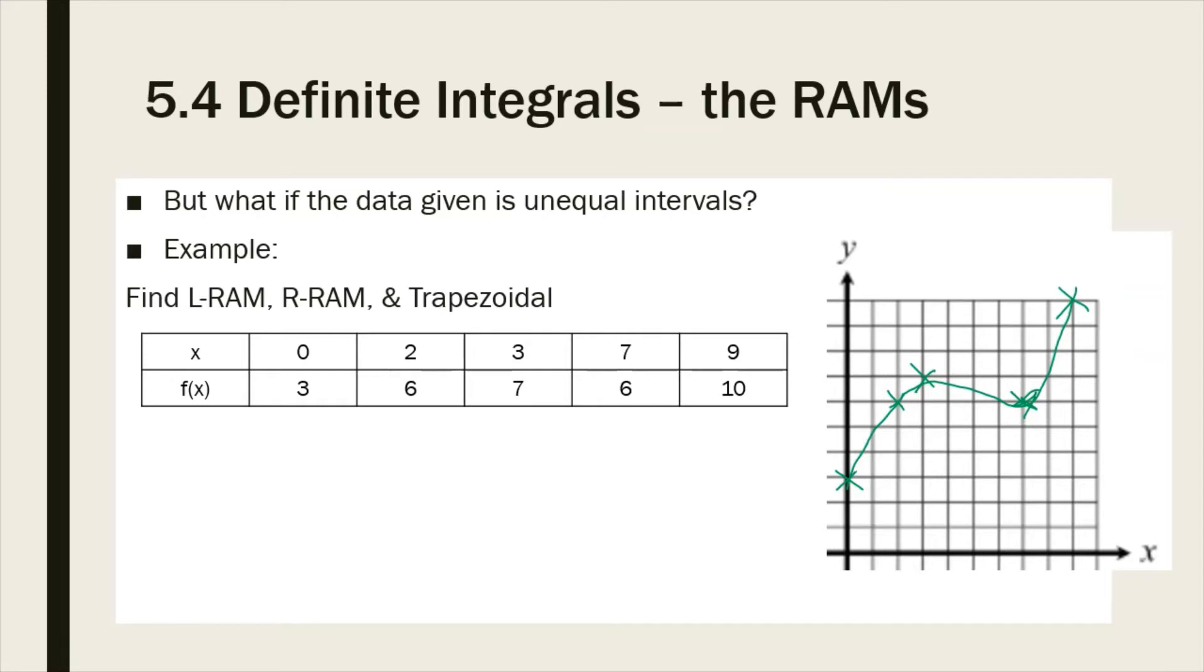Now we are going to find this for our left rectangular, our right RAM, and the trapezoidal. And so you can see how this affects the process. It's not quite as easy as the other process, but it's still pretty easy. So we're going to start with our LRAM, our left side.